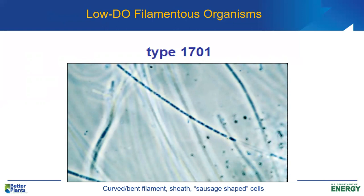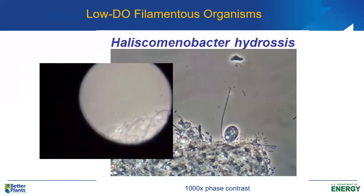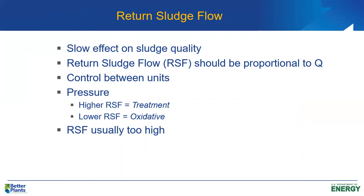There are microscopic slides here of low-DO filaments — type 1701 — showing what they look like under the microscope. H-hydrosis is another low-DO filament. The return sludge flow is a way we control the process, but we don't have nearly as much control there as we do with the waste sludge flow.